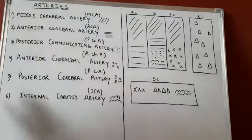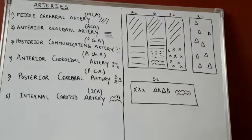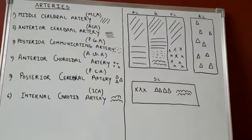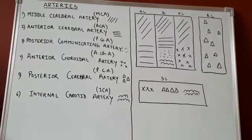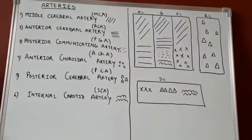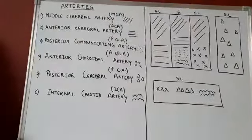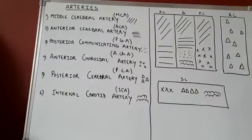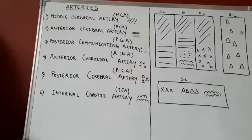So these are the 6 arteries which supply the internal capsule. Now the question comes: which part of the internal capsule is supplied by which artery? To understand this, I will be explaining it with the help of a simple diagram. On the other side of the board, you can see that I have drawn this diagram — just to memorize which part of the internal capsule is supplied by which artery.